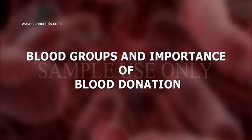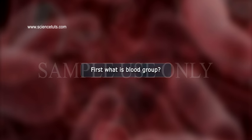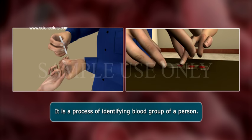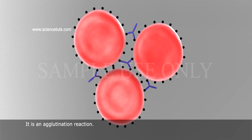Welcome students. Today we will start our session with Blood Groups and Blood Donation. First, what is a Blood Group? It is a process of identifying the blood group of a person. It is an agglutination reaction.